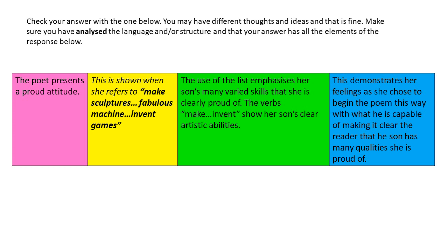Check your answer with the one below. You may have different ideas and that's fine. Make sure you have analysed the language and/or structure, and that your answer has all the elements of the response. The poet presents a proud attitude. This is shown when she refers to: make sculptures, fabulous machine, invent games. The use of the list emphasises her son's many varied skills that she's clearly proud of. The verbs 'make' and 'invent' show her son's clear artistic abilities. This demonstrates her feelings as she chose to begin the poem this way — with what he's capable of — making it clear to the reader that her son has many qualities she's proud of.